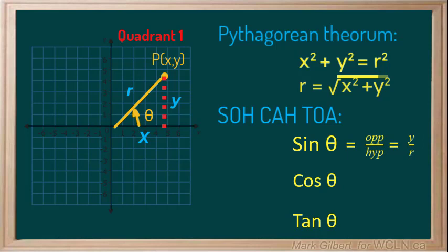Sine of theta, which is the opposite over the hypotenuse, becomes y over r. Cosine of theta, which is the adjacent over the hypotenuse, becomes x over r. Tangent of theta, which is the opposite over the adjacent, becomes y over x.